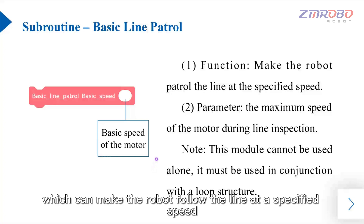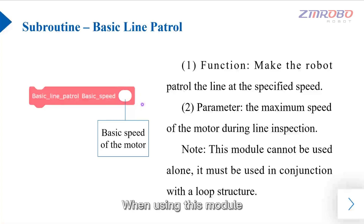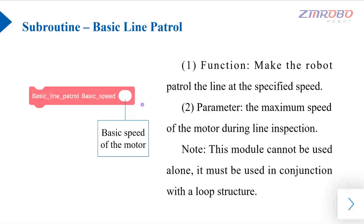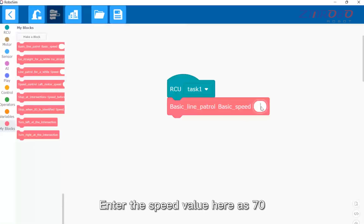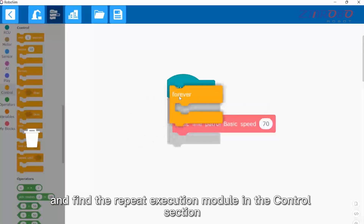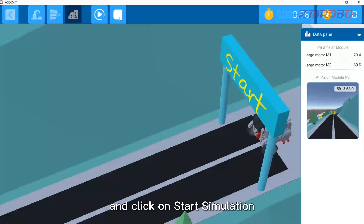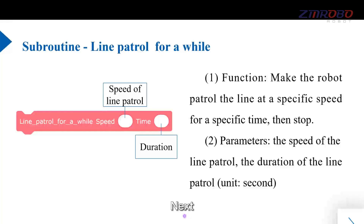Next let's learn the call module of basic line patrol, which can make the robot follow the line at a specified speed. Here you can enter the basic speed of the motor during line patrol. When using this module, it should be noted that it cannot be used alone and must be used together with the loop module. Drag out the call module, enter the speed value of 70, find the repeat execution module in the control section, switch to the simulation interface, and the robot will walk along the road.